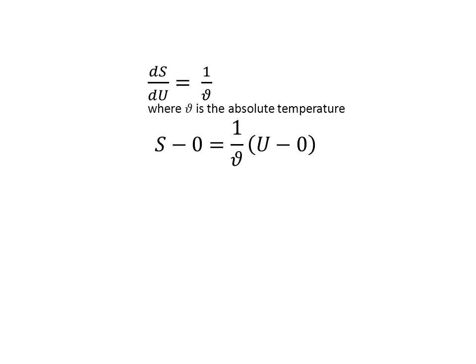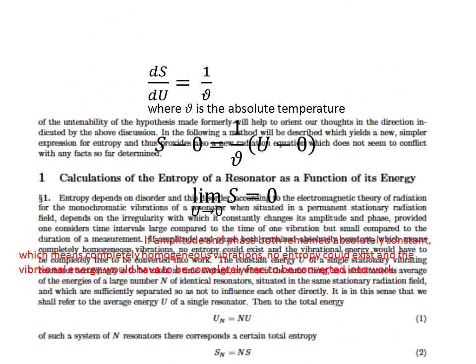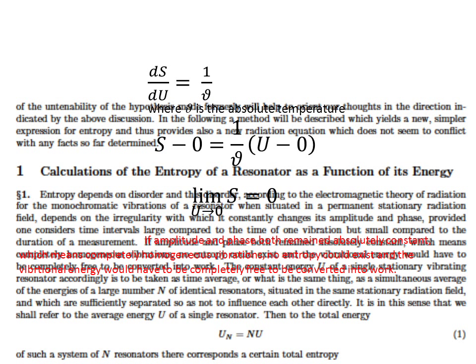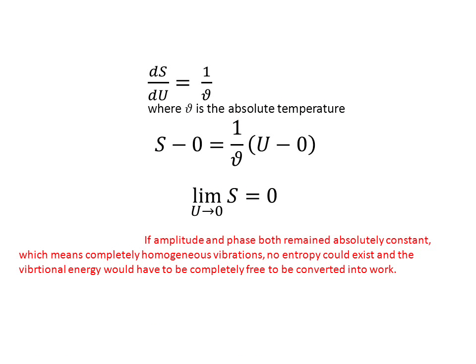We can formally write the result from the integration as shown, which is also physically correct because entropy tends to zero when the quantity U approaches zero, as Planck himself has explained explicitly in his paper. Therefore, the quantity U cannot be the mean energy of a resonator as Planck has suggested.